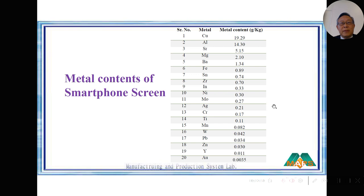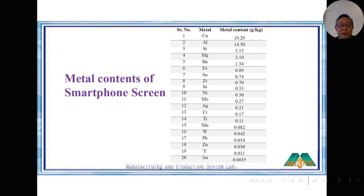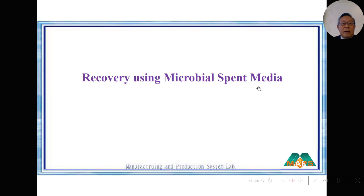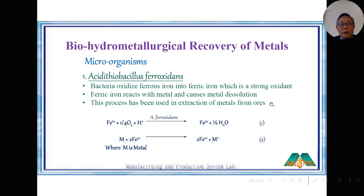We sent the dissolved solution to ICP-OES for analysis. We found the top 20 metals by quantity contained in the waste smartphone screen. The top quantity is copper, followed by aluminum, and so on. Notably, indium is number nine — it is being used significantly for the touch screen. Larger screens use more indium, so indium is indeed an important element.